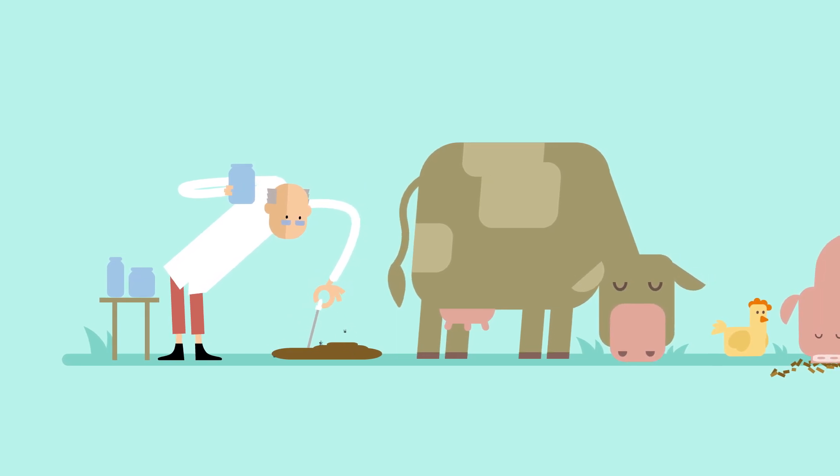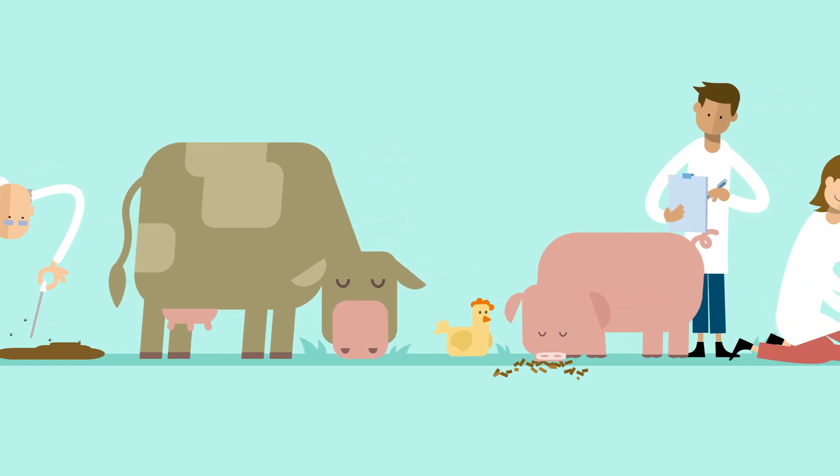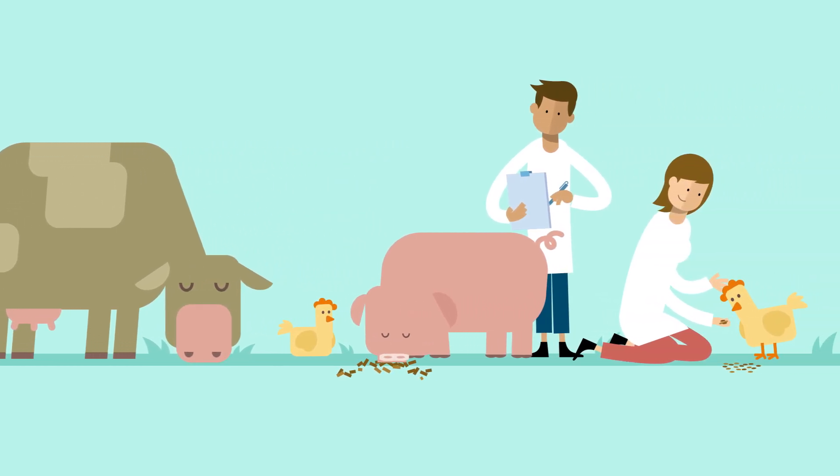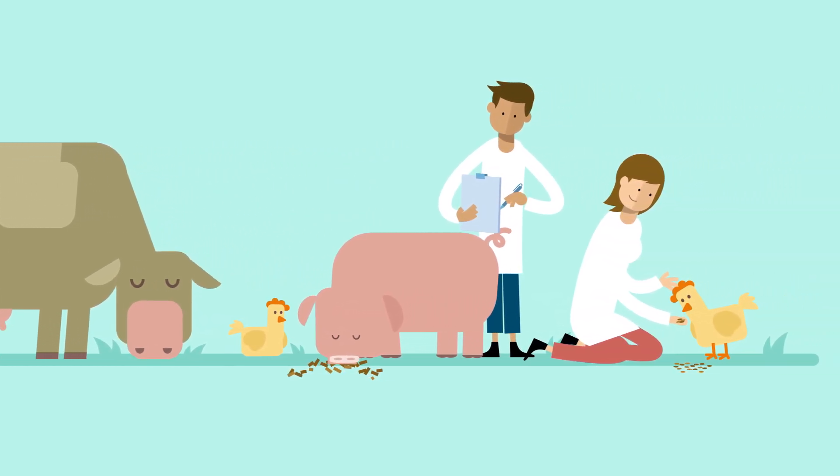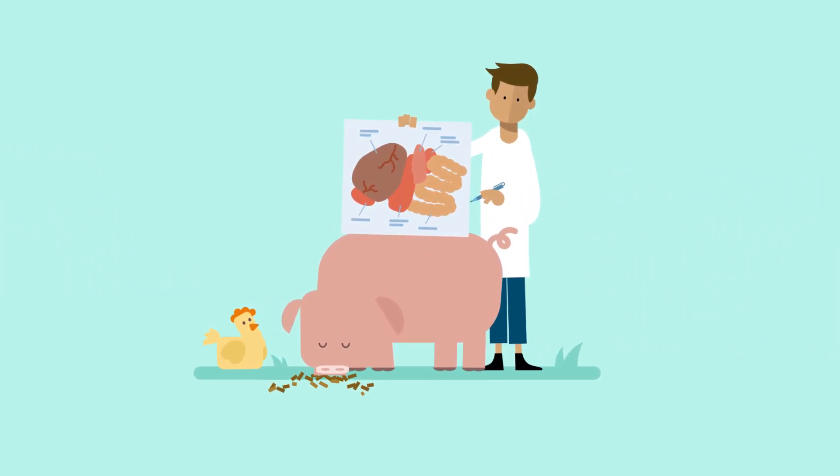For years, scientists from Wageningen University and Research have been studying animal health and welfare. The health of an animal can't just be determined by looking at the exterior. You can learn a lot about its health by examining its organs as well.